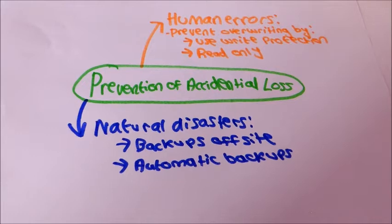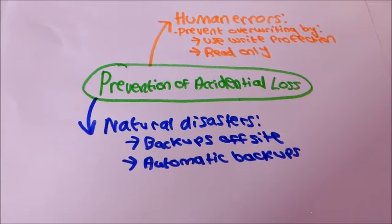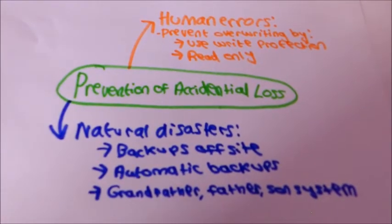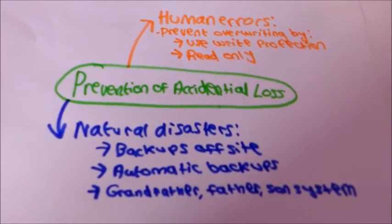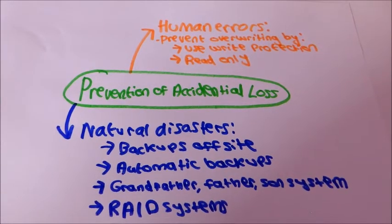Use an online tape or disk streamer which automatically backs up the data on a network. Use the grandfather father son security system in batch processing systems such as payroll. Use raid systems to mirror disks.